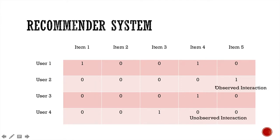For the one entry, we call it observed interaction because we know that this user has interacted with this item before. And for the zero entry, we call it an unobserved interaction since we're not sure if this user will interact with this item in the future or not.